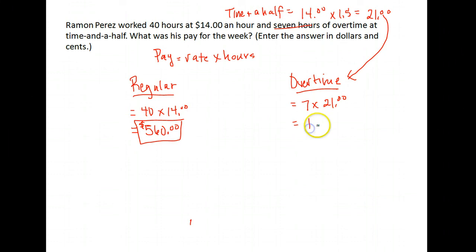Which comes to 7 times 21, which is $147 for overtime pay. So his total pay for the week would be $560 from his regular pay, plus $147, which gives me a total of $707.